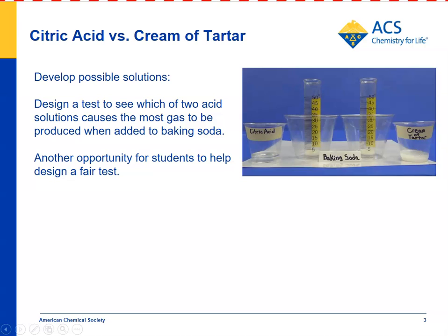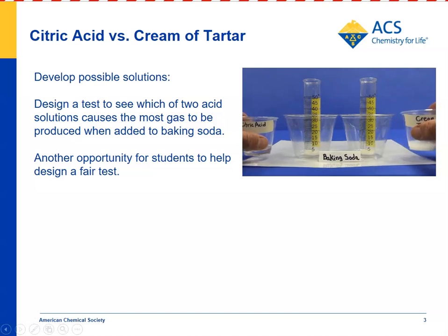The first thing students need to do is come up with reactants that will produce a gas to inflate some kind of bag that will make the cell phone float. They test two different substances: citric acid and cream of tartar. You would help students design the experiment to be sure it's a fair test.